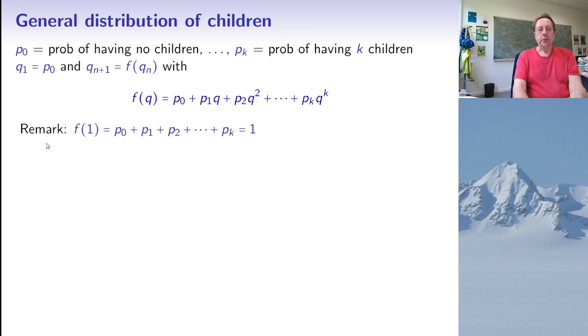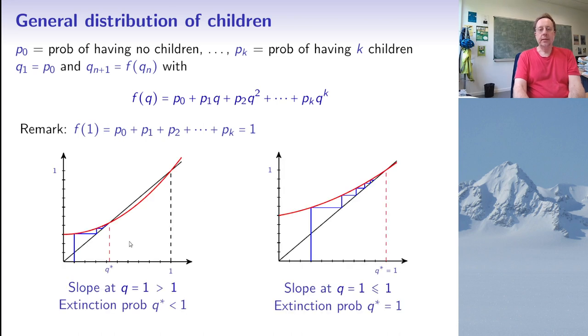And again, one remark is that if I compute F for Q equals 1, I get the sum of all these probabilities, which has to be 1. So F of 1 will always be equal to 1. Now, if you think about this graphical construction we've done before, you need just some assumptions on P0 and P1 to be non-zero to avoid singular cases. But then you realize that there are only two possibilities.